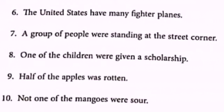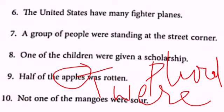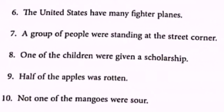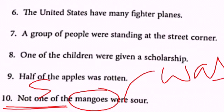'Half of the apples was rotten.' When we use fractions like half, one-third, or one-fourth, the verb agrees with the noun — since 'apples' is plural, the correct verb is 'were.' 'Not one of the mangoes were rotten' — 'mangoes' is plural but preceded by 'not one of the,' which makes it singular, so the following verb should also be singular: 'was.'